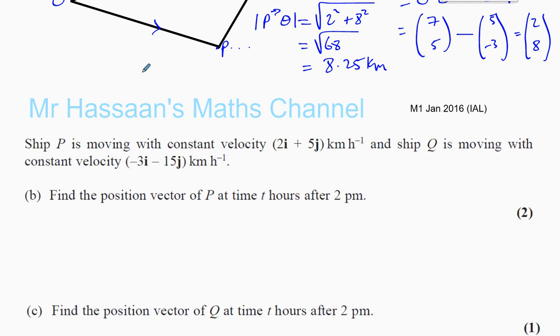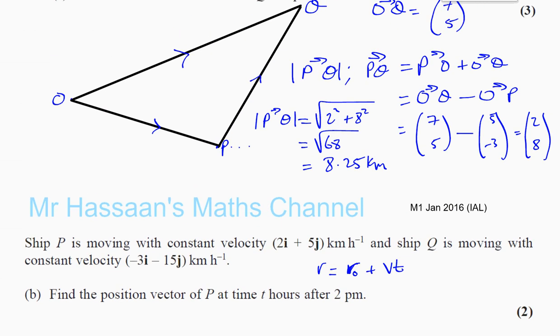We've got to find the position vector of P at time t hours after 2 p.m., so basically we need to find the general equation. The general equation for the position vector of a point is equal to the position vector at the original time when time was zero, the initial position when time was zero.